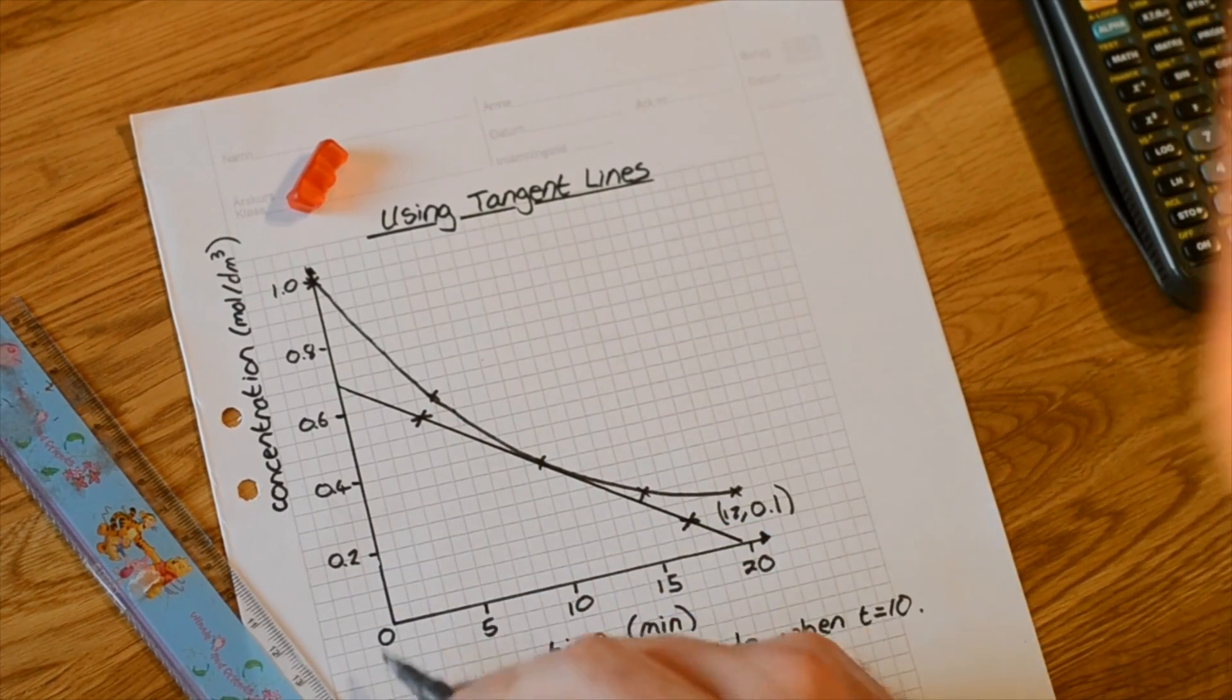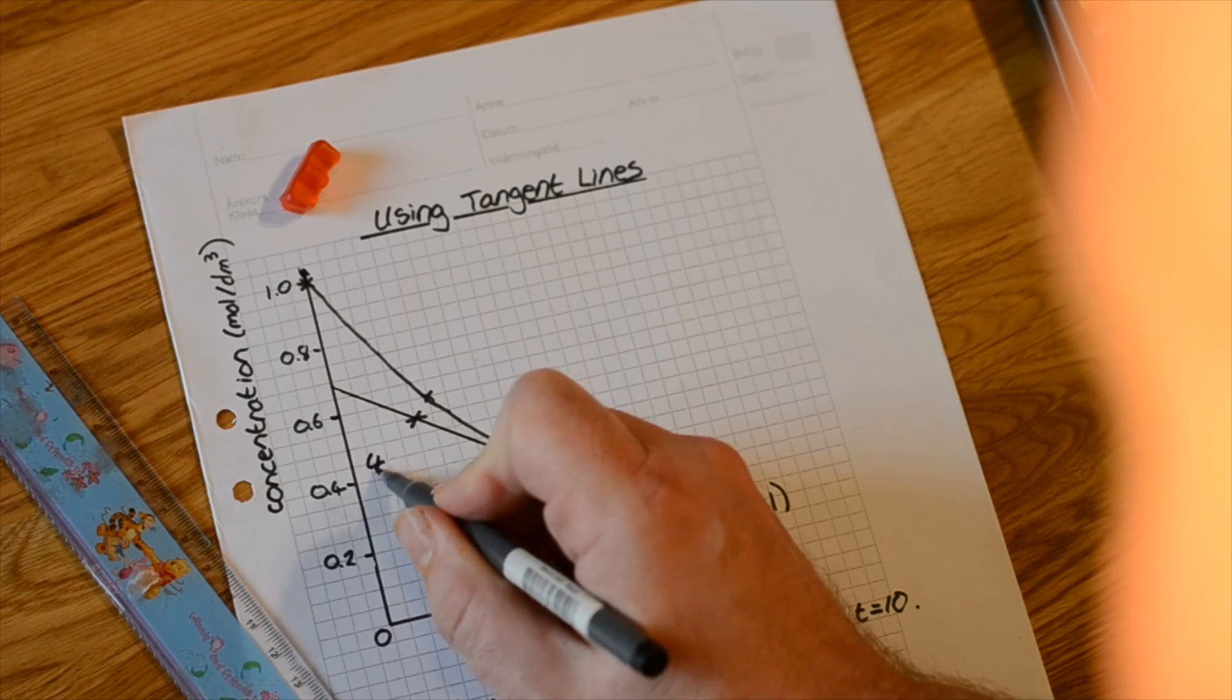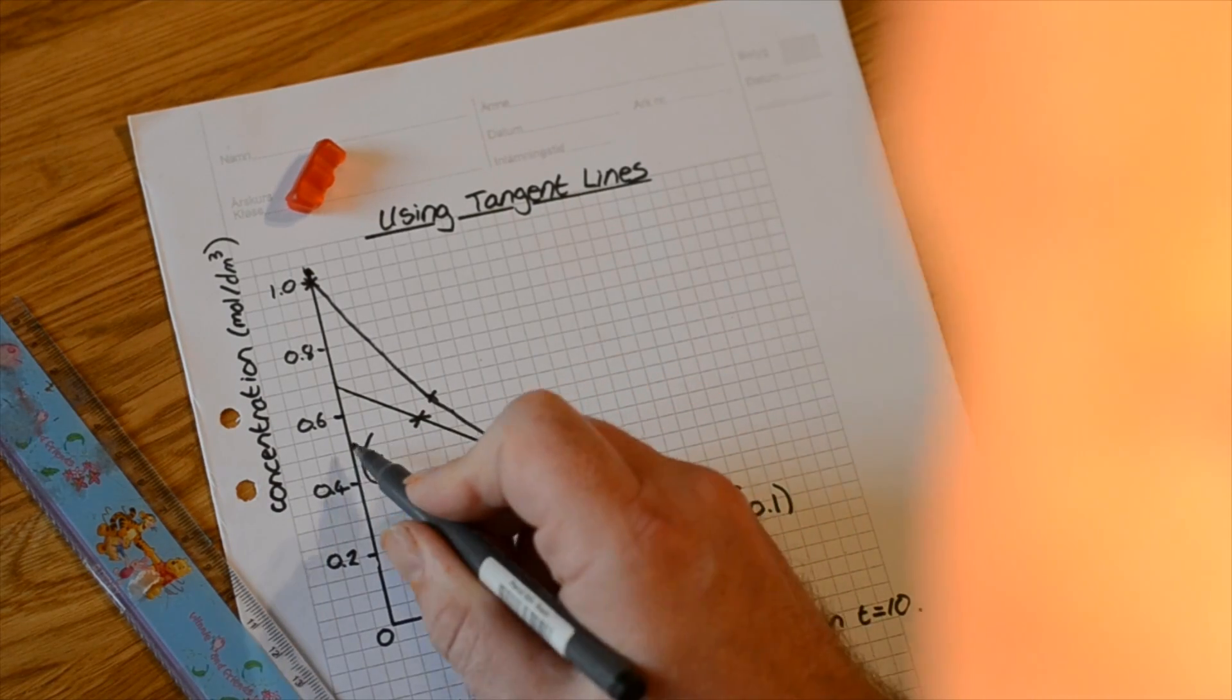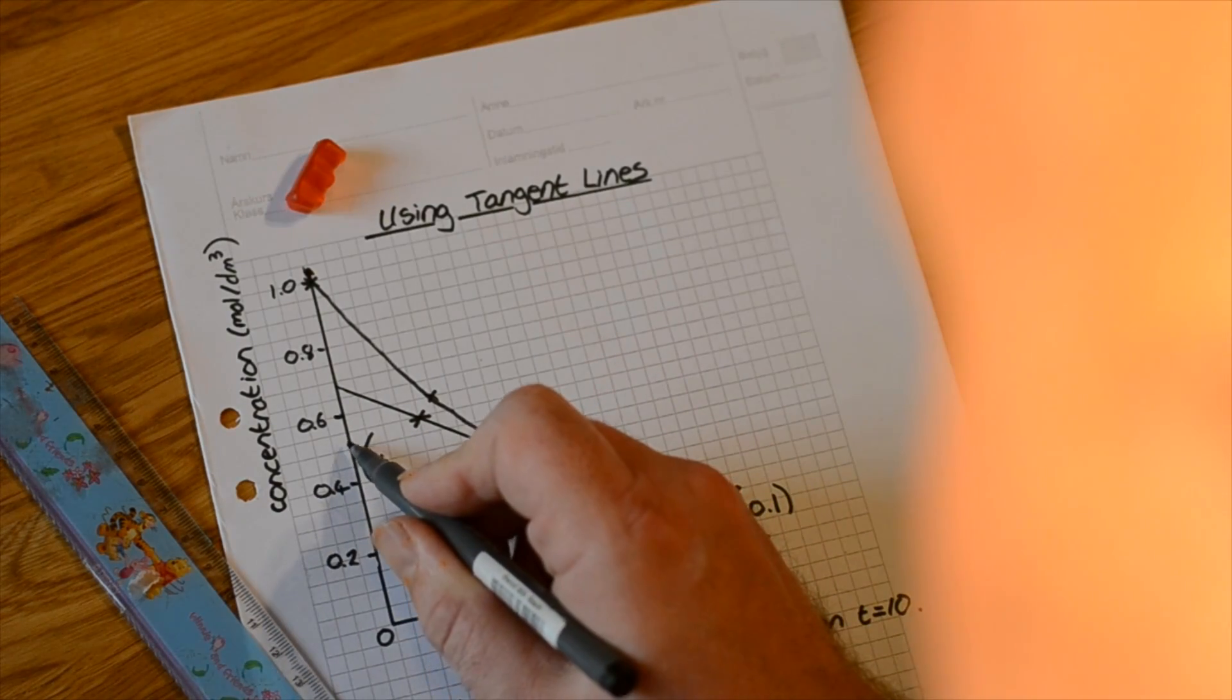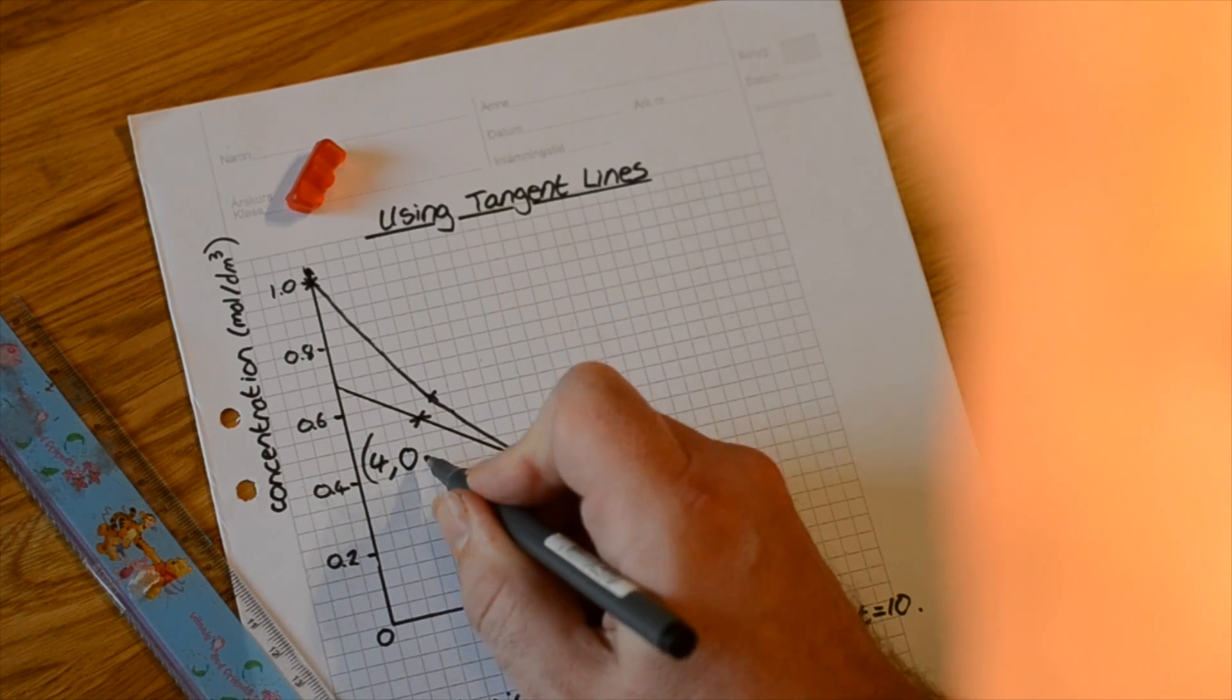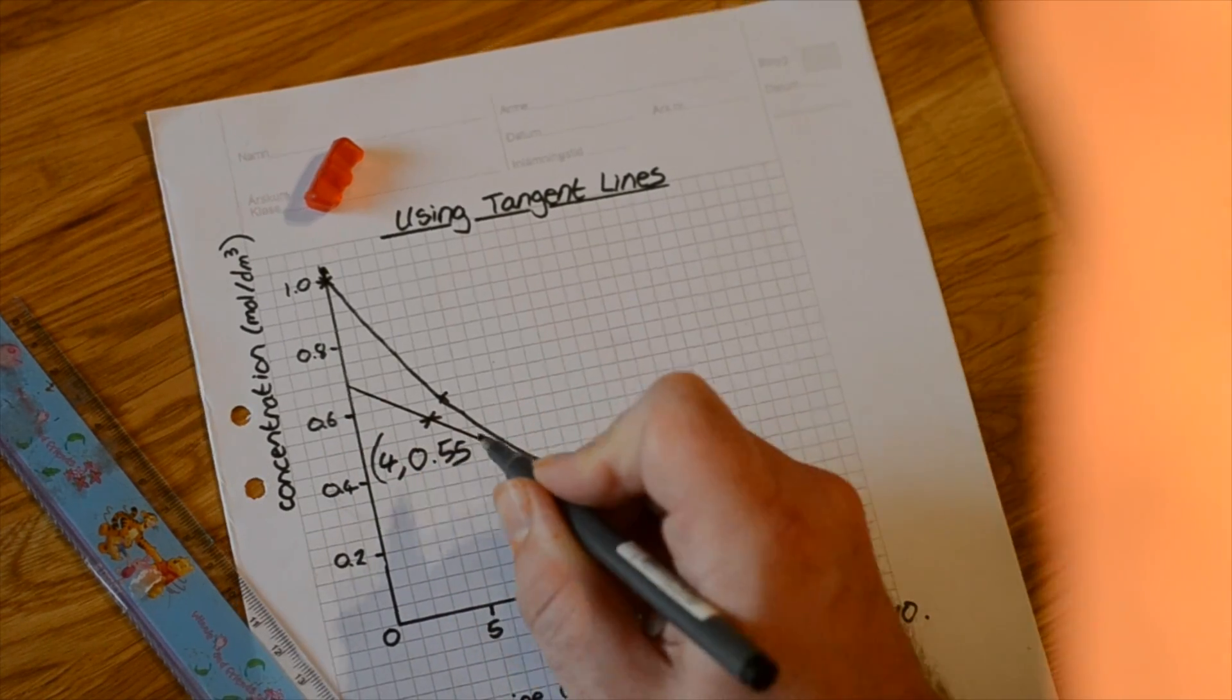The coordinates of this point is going to be at 4, this is 0.5, this is 0.55. The reaction rate is simply the gradient of the curve at this point.